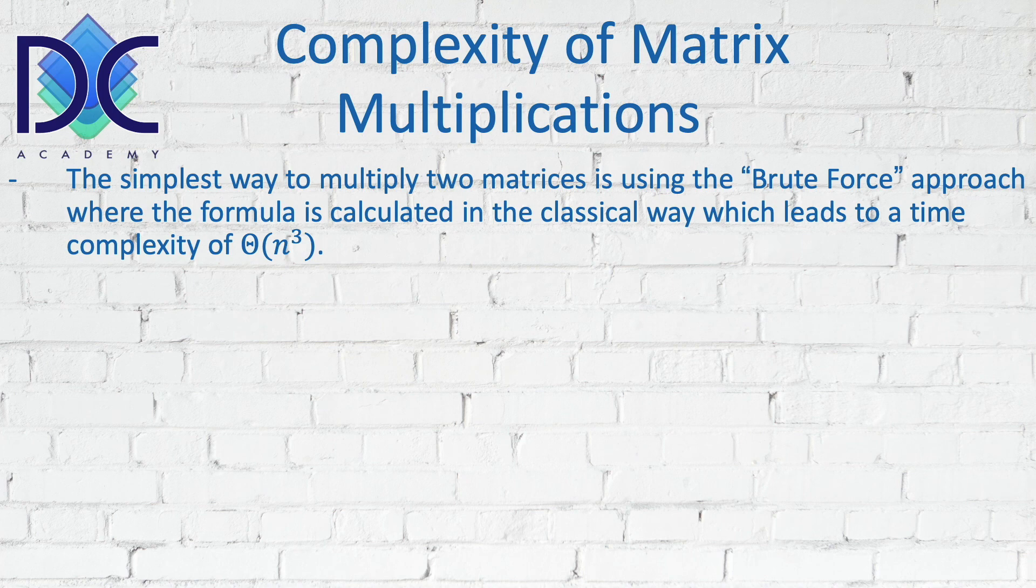We are going to calculate that multiplication by doing all the different steps that we did before, and we can prove that we get here a complexity of big theta n to the third power. And n to the third power means that it's going up very quickly.